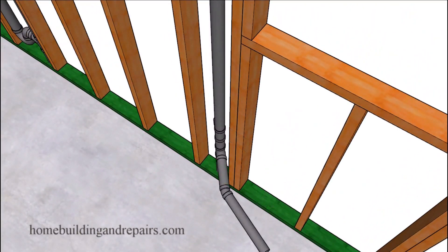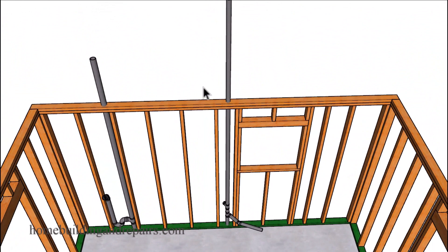Or if you're going to be installing new plumbing in the foundation, you can simply move the pipe over and go around the king stud like we have here.